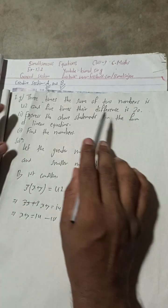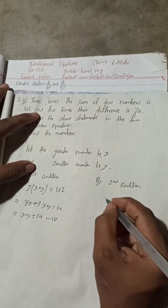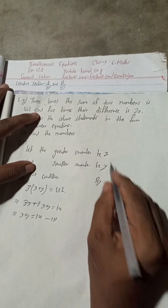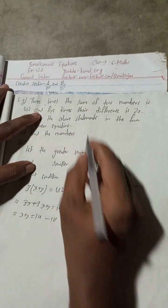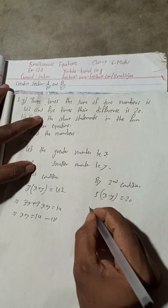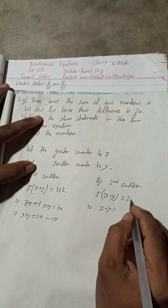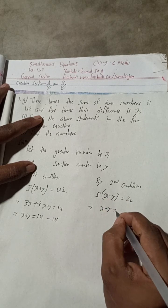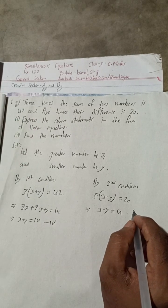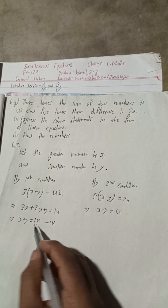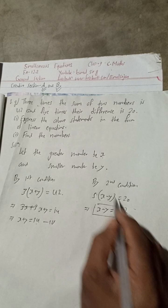By the second condition: five times the difference is 20. The difference means the greater number minus the smaller number, which is x minus y. Five times this difference equals 20, so dividing both sides by 5 gives x minus y equals 4. This is Equation 2.